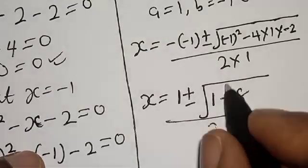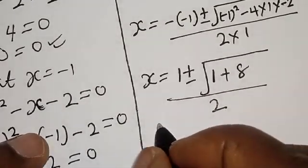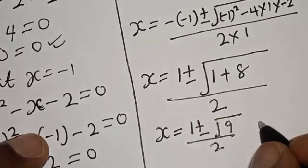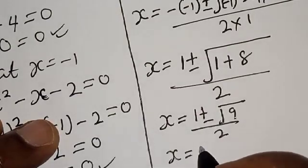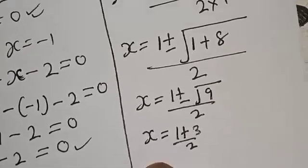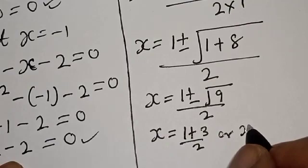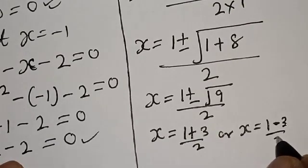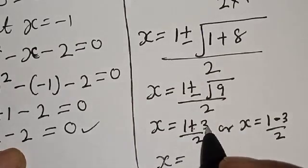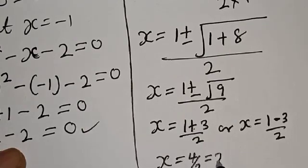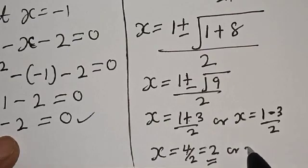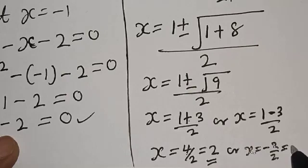So s equals 1 plus or minus square root of 9, over 2. The square root of 9 is 3. Therefore s equals (1 plus 3) over 2, which is 4 over 2, giving s equals 2. Or s equals (1 minus 3) over 2, which is minus 2 over 2, giving s equals minus 1.